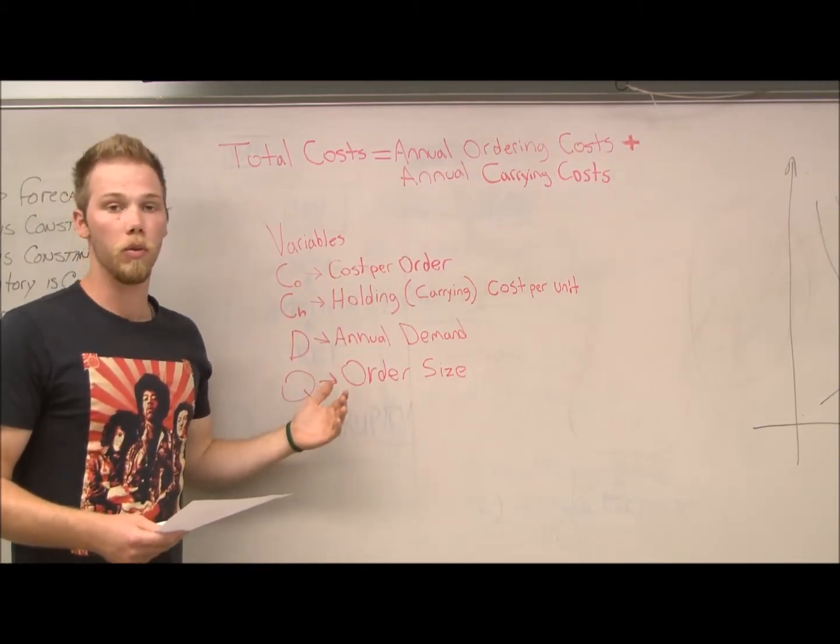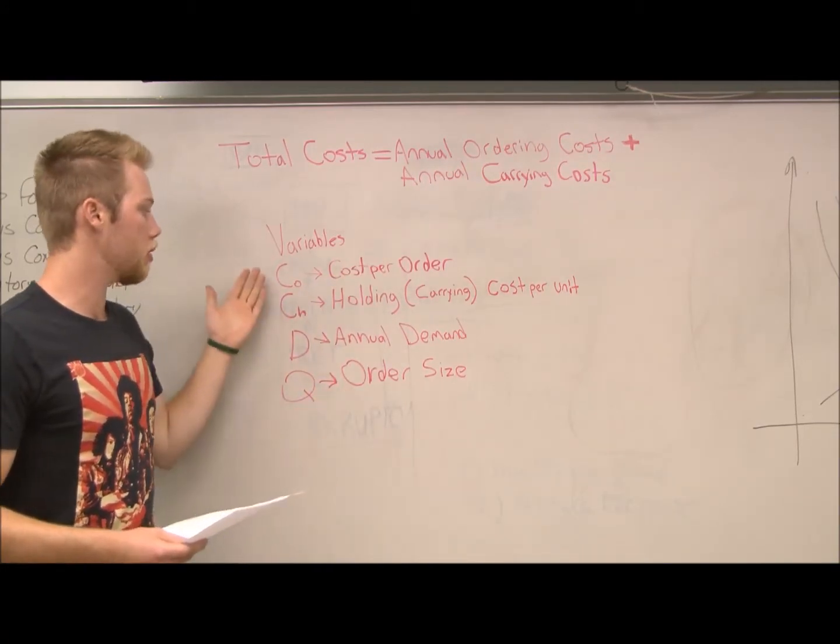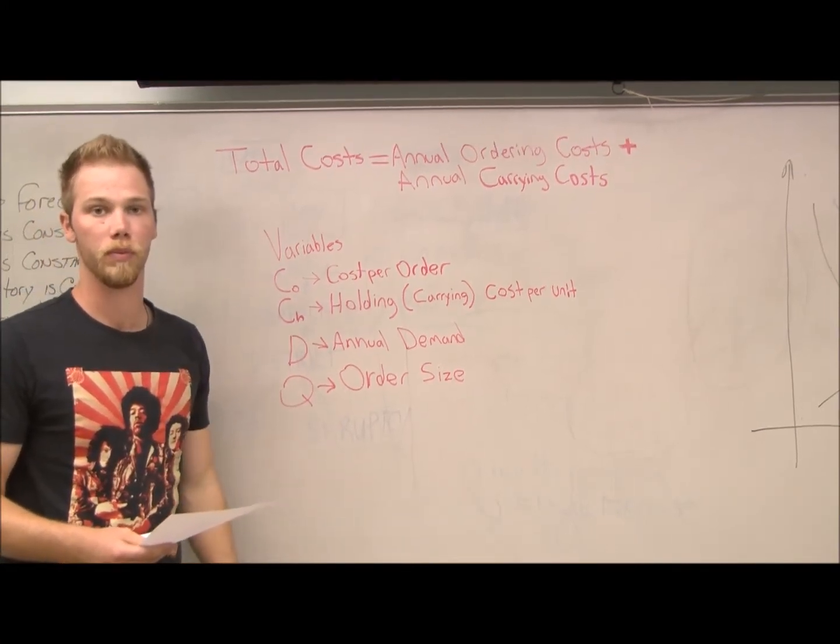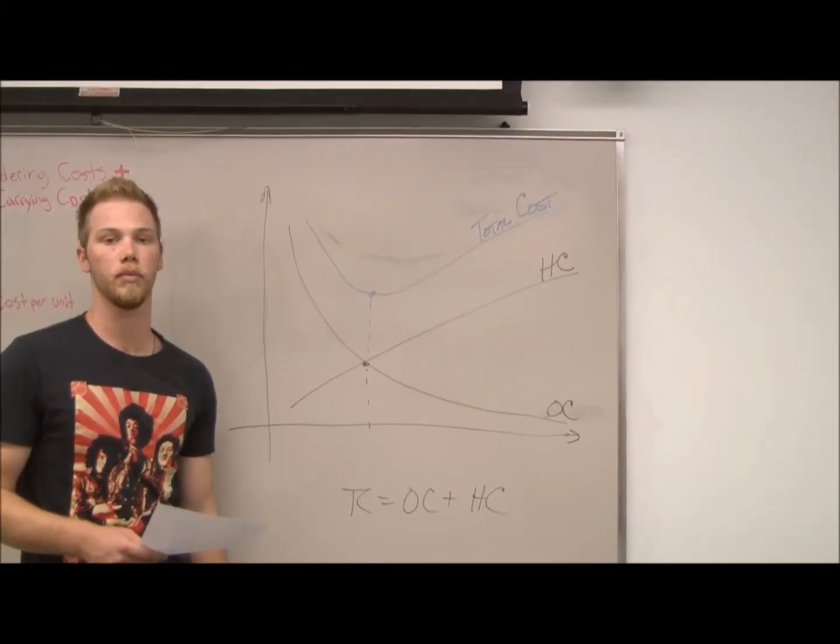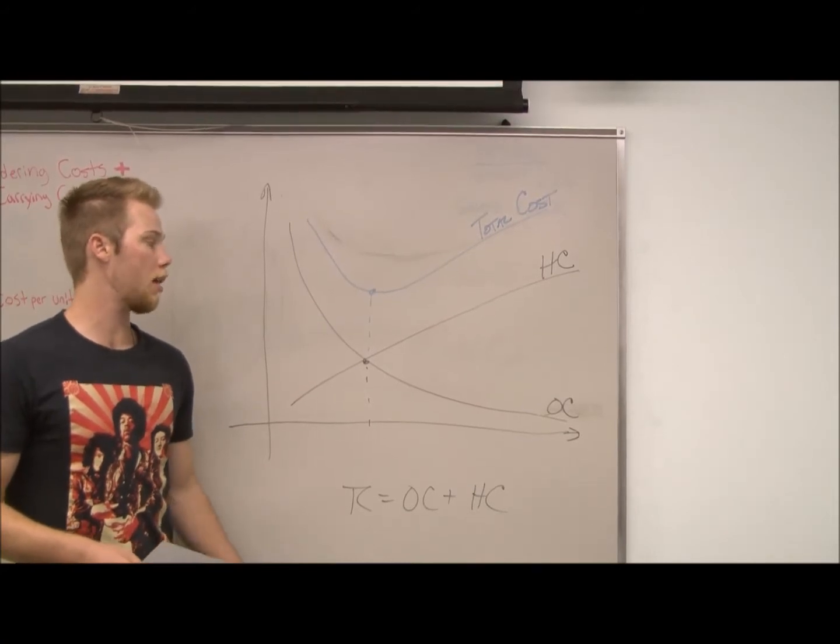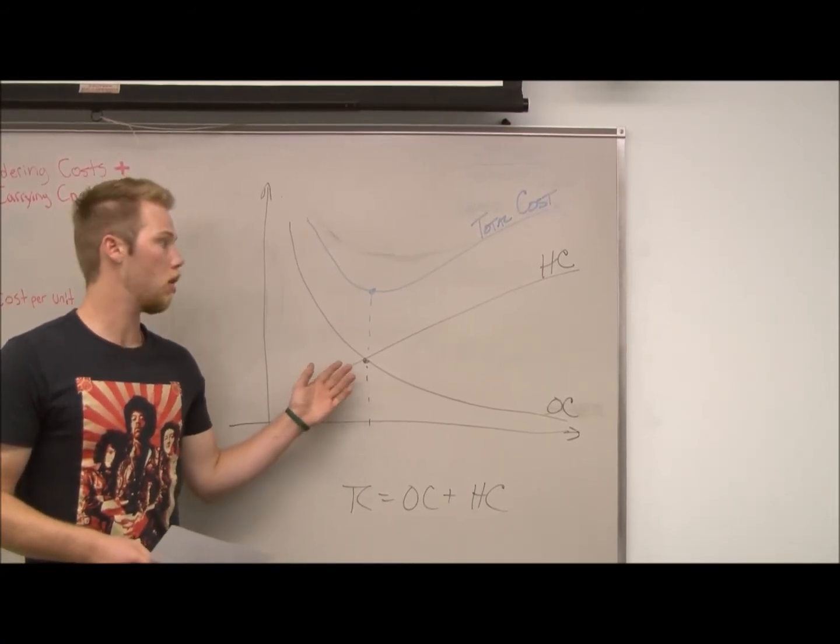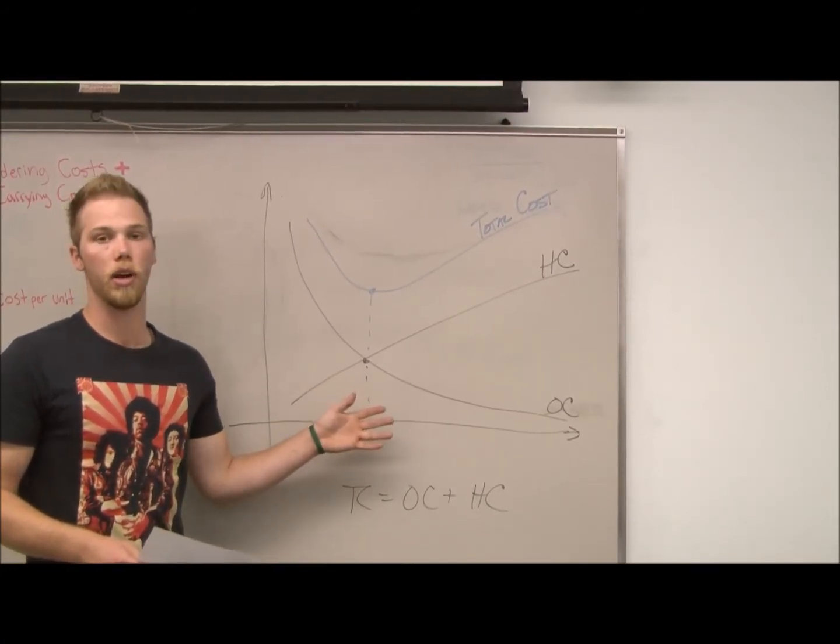Some of the variables we're going to be using coming up are listed right here. The minimum total cost happens at the intersection of holding costs and ordering costs.